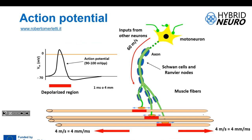How is the EMG signal generated? Each neuron, when activated, has a membrane potential that is negative at rest. When the motor neuron receives inputs from the brain or from other neurons, if this input is large enough so that the membrane potential changes and exceeds a certain threshold, we have the discharge of an action potential.